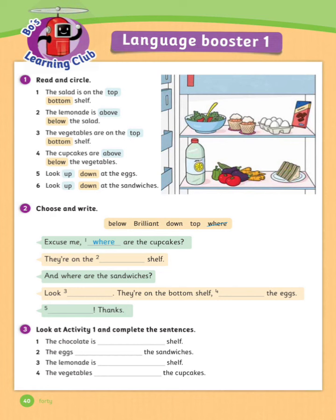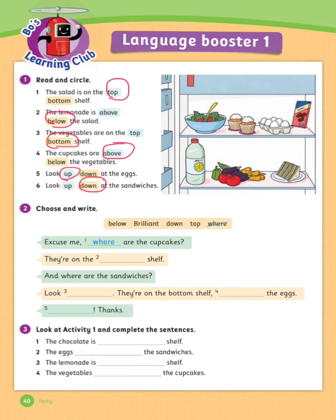Look at the picture and circle the correct answer. Let's see the answers. Number 1: The salad is on the top shelf. Number 2: The lemonade is below the salad. Number 3: The vegetables are on the bottom shelf. Number 4: The cupcakes are above the vegetables. Number 5: Look up at the eggs. Number 6: Look down at the sandwiches.